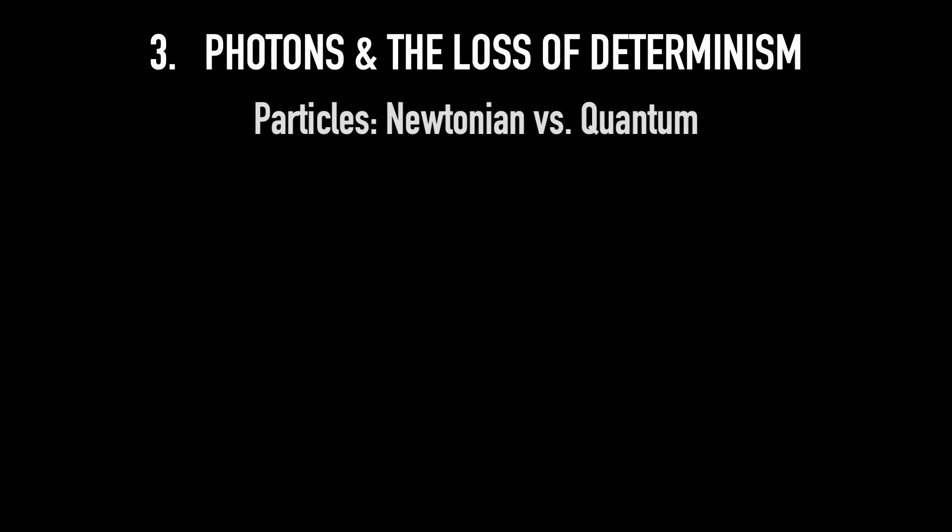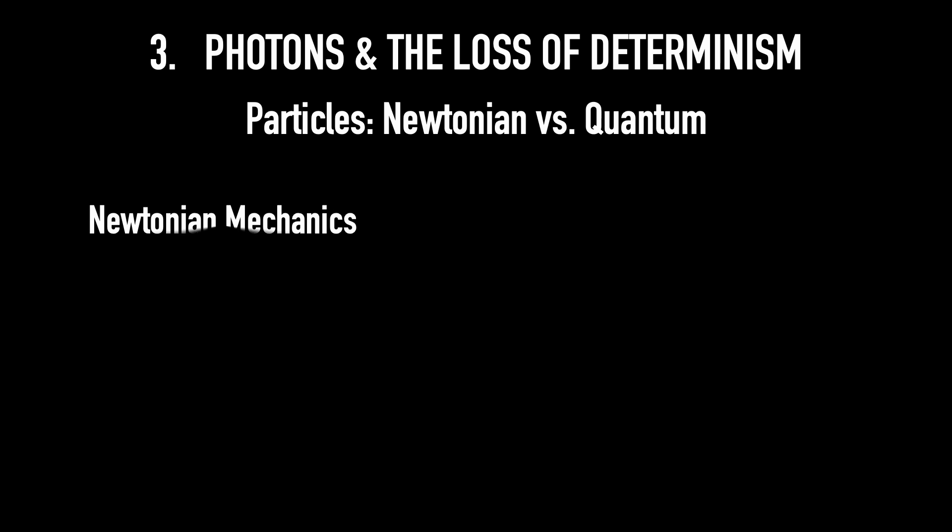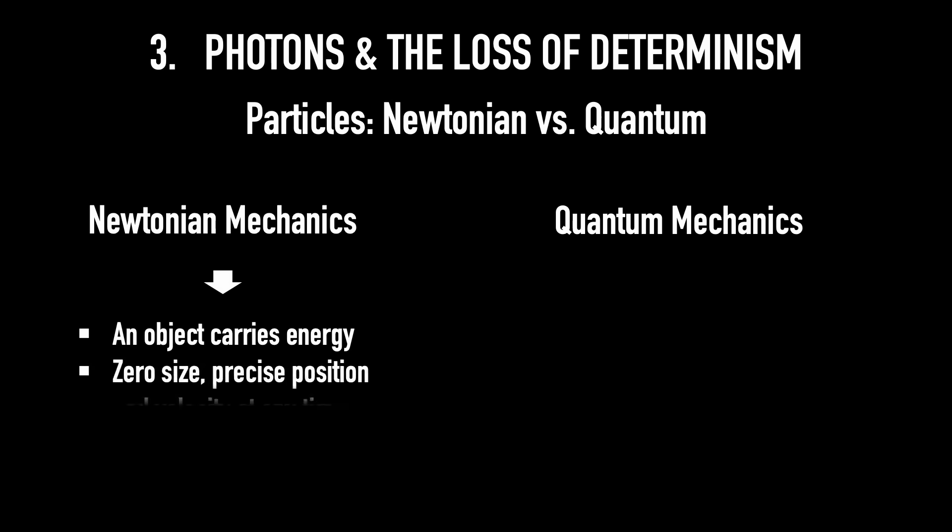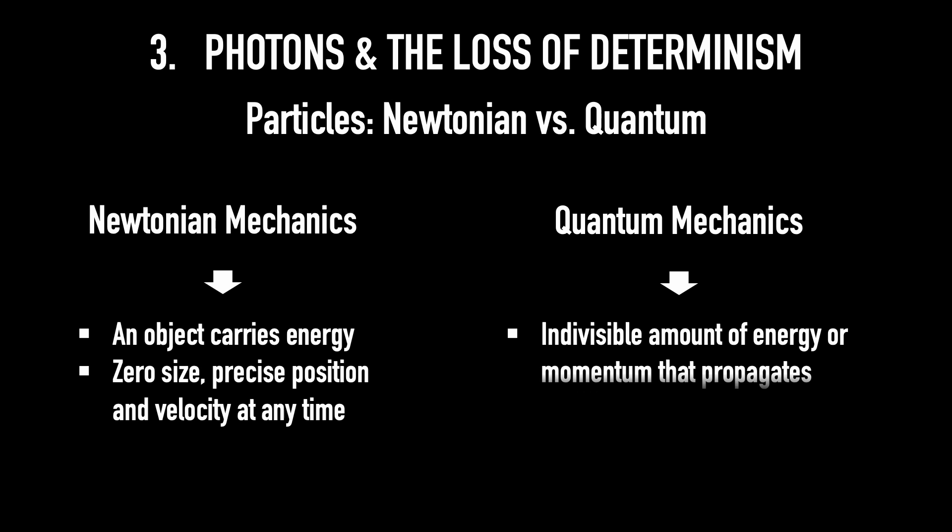Let's compare quantum and Newtonian particles. There is an important difference between a particle in Newtonian mechanics and in quantum mechanics. In Newton's view, a particle is an object that carries energy, has zero size, and has a precise position and velocity at any time. In quantum mechanics, a particle is just an indivisible amount of energy or momentum that propagates with no definite position or velocity. And most profoundly, it reflects the loss of determinism.